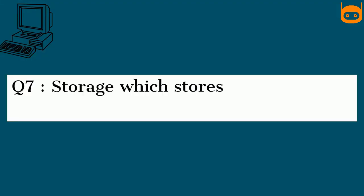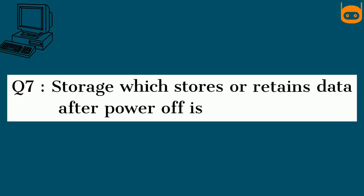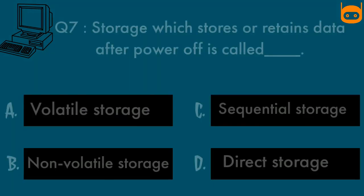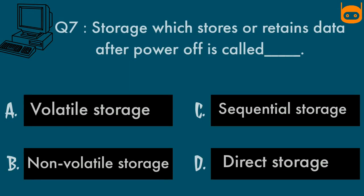Seventh question is: Storage which stores or retains data after power off is called? Options are: Option A, volatile storage. Option B, non-volatile storage. Option C, sequential storage. Option D, direct storage.